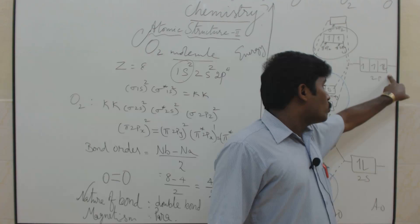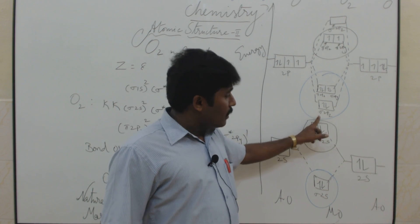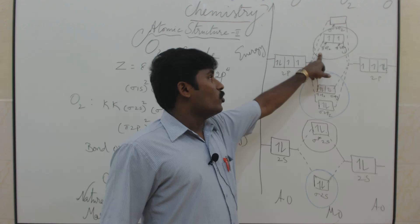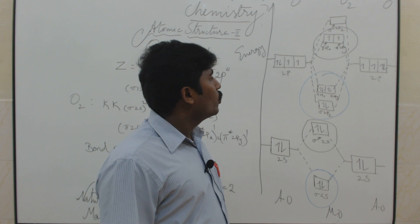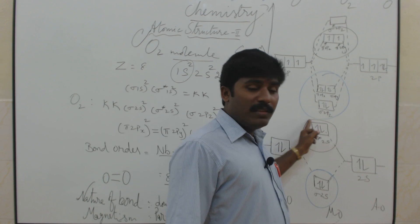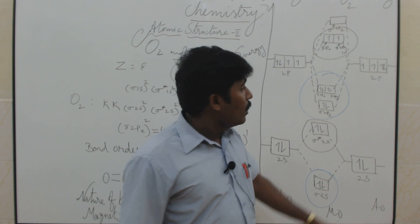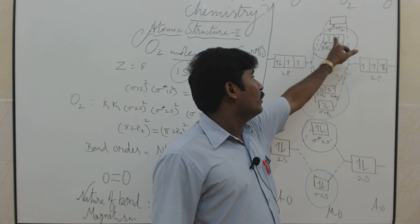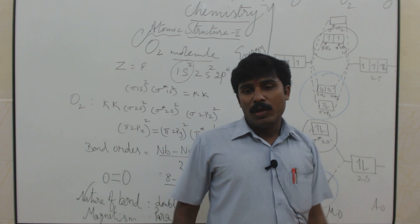With 8 electrons total in the 2p level, the 3 bonding orbitals can hold a maximum of 6 electrons, so 6 are used in bonding. The remaining 2 electrons go into the anti-bonding level: π*2px gets 1 electron and π*2py gets 1 electron. The electronic configuration is: KK, σ2s2, σ*2s2, σ2pz2, π2px2 = π2py2, π*2px1 = π*2py1.